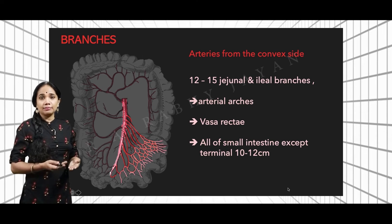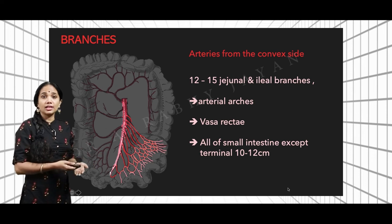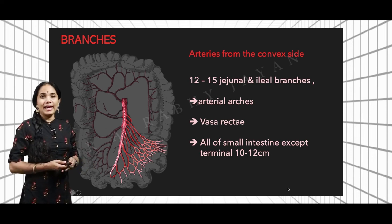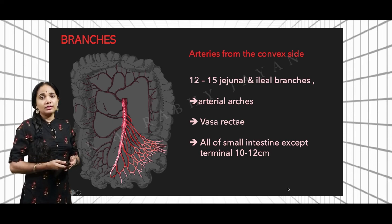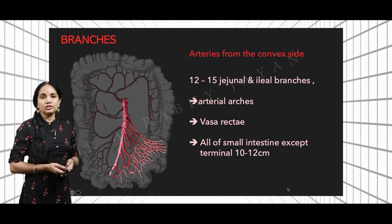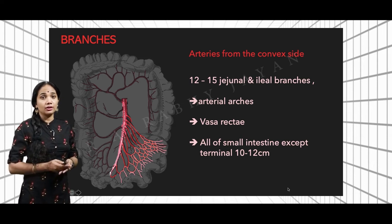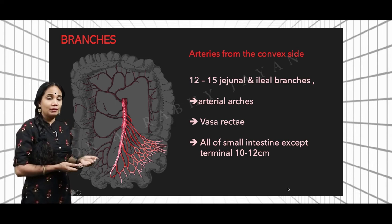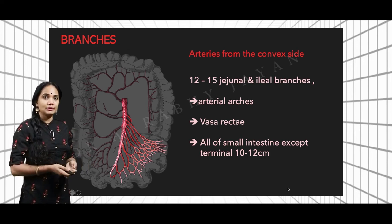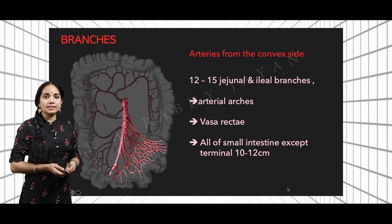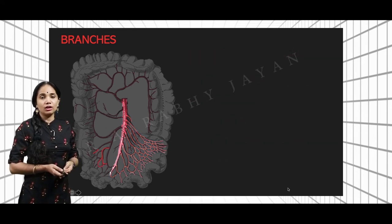All of the small intestine is supplied by branches from the convex side of the superior mesenteric artery, except the last part, which is supplied by the ileocolic artery. The terminal 10 to 12 centimeters of the small intestine are not supplied by the jejunal and ileal branches but by another artery also arising from the superior mesenteric, though not from the same side. Now let us look at the arteries coming from the concave side of the superior mesenteric artery.